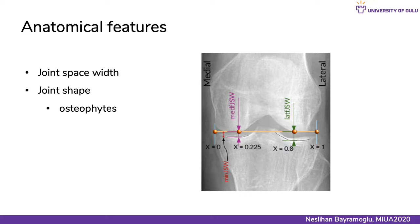What are these anatomical features? The most important one is the measurement of joint space width, which is the standard tool for the assessment of knee OA progression, and it is not included. Joint shape is also missing in these studies. Although deep features might cover some aspects of these anatomical features, the added value of their explicit inclusion to the models has not been investigated.